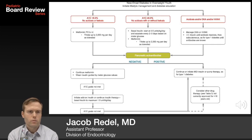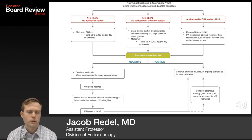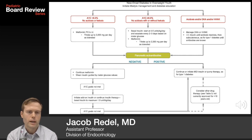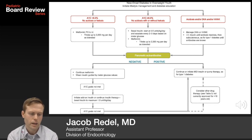The American Diabetes Association released an algorithm for initial treatment of suspected type 2 diabetes. In overweight youth: if A1c is under 8.5% with no ketones or acidosis, start metformin alone and titrate up to 2,000 mg/day. If A1c is above 8.5% with no ketosis or acidosis, start basal insulin in addition to metformin. If there is acidosis, DKA, or hyperglycemic hyperosmolar state, manage with IV insulin and start basal-bolus until the diagnosis is clarified.